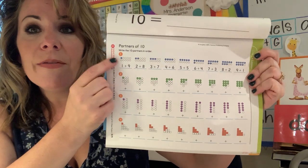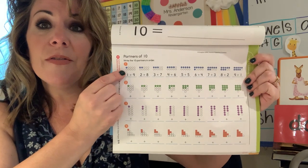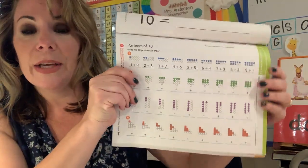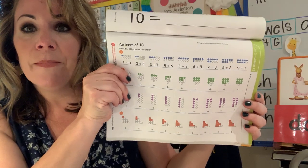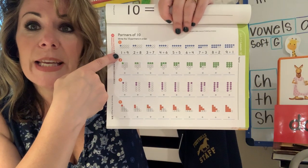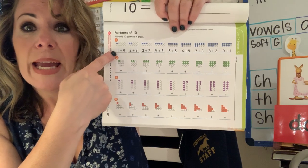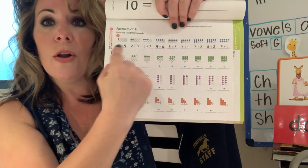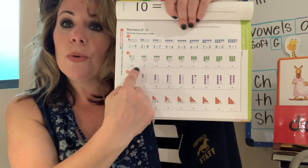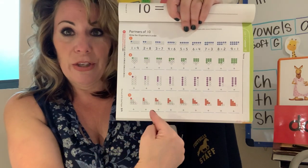Look, we have objects that are shaded in, colored in, and we have objects that are blank or not colored in. What they've done is turned those pictures into an equation, all the way across the row. Now you have to come down here and do your equations.